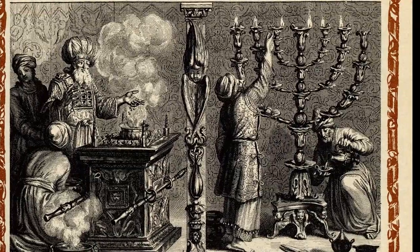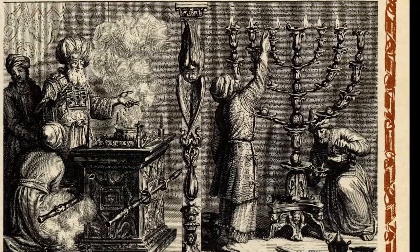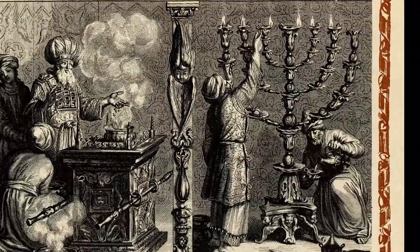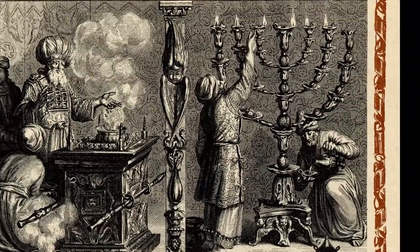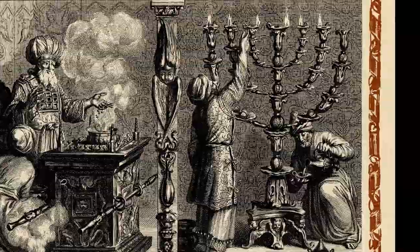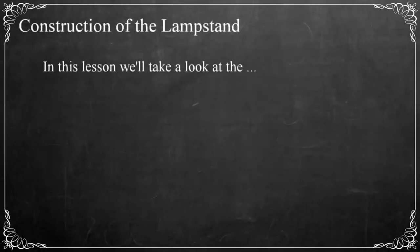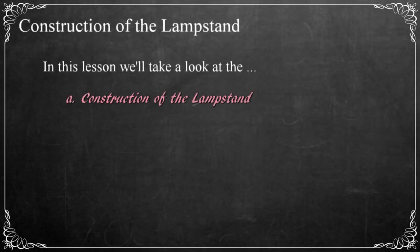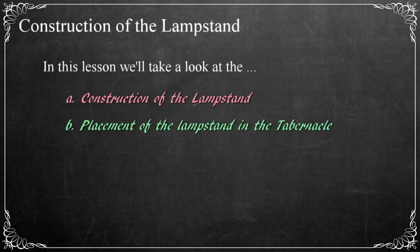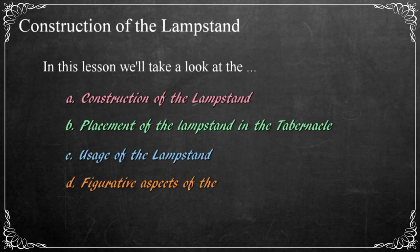The King James version refers to the lampstand as the candlestick, which might convey the idea of a feeble wick limited in its ability to provide illumination. As we examine the lampstand, we'll see that it, like other objects in the tabernacle, was a majestic work of art that conveyed a sense of power while being functional at the same time. In this lesson we'll take a look at the construction, placement, usage, and figurative aspects of the lampstand.